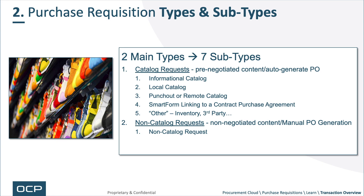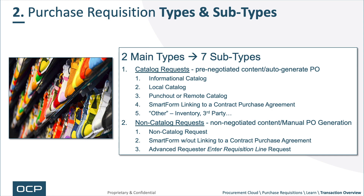Non-catalog requests involve non-negotiated content and require manual PO generation. Typically, you've searched for something, don't see what you want, and fill out a non-catalog form — it's a subset of the total fields. Those are not linked to a smart form, but you can use a smart form to create an off-catalog request as well. The advanced requester 'enter requisition line' form is the non-catalog request with two or three times as many fields. If you're doing a non-catalog request, you can still make changes, but you have to go into the review step at the end of adding all lines to the cart.